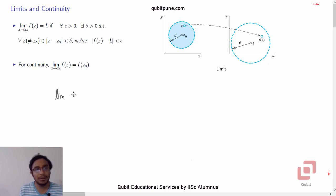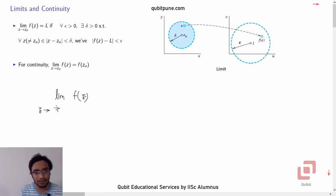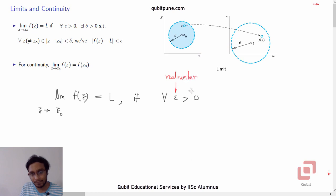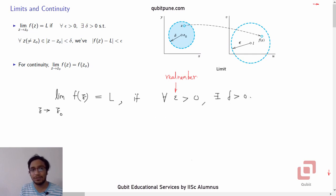The notation is the same: limit of some function f(z) as z tends to the complex number z₀. We call this limit L if, for every epsilon greater than 0 — and although we are in the domain of complex numbers, epsilon is still a real number — there exists another real number delta, which is also positive. So both epsilon and delta are real numbers. We call the limit of f(z) as z tends to z₀ equal to L if, for every positive epsilon, there exists a corresponding positive delta.